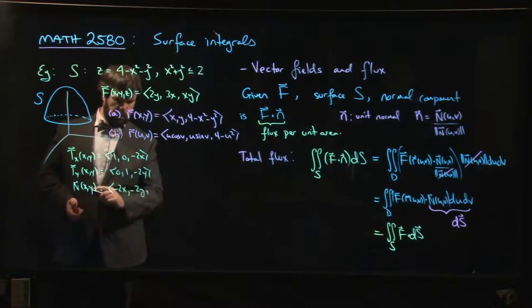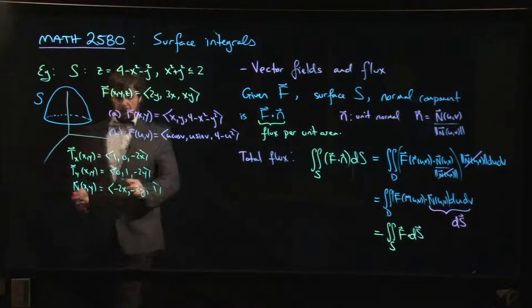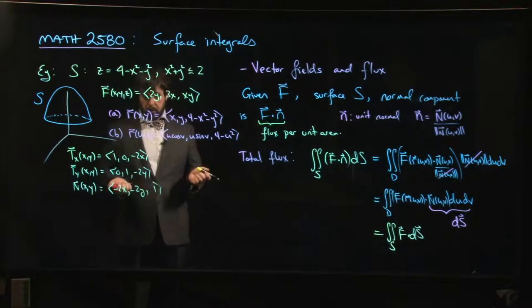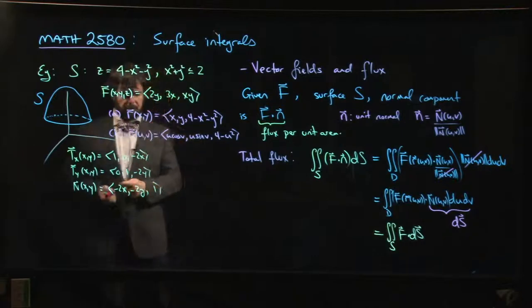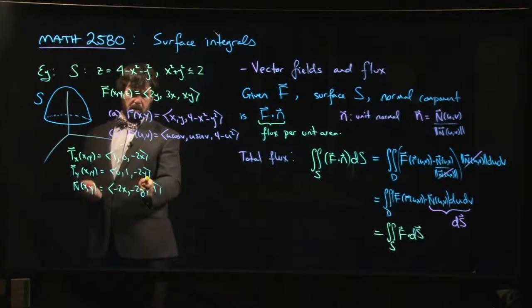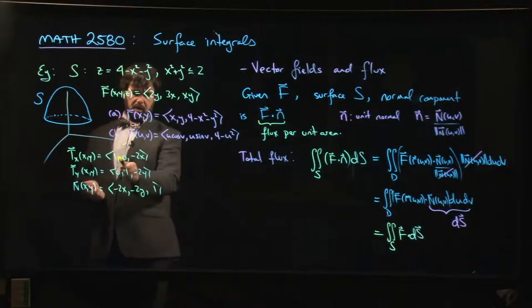The normal vector is going to be the cross product. It's going to be (-2x, -2y, 1). Let's make sure I didn't mess that up. Yeah, and that comes with a plus, plus, plus.